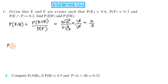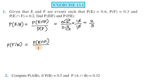Next, find P(F|E). The formula for P(F|E) is P(E∩F) divided by P(E). P(E∩F) is 0.2 and P(E) is 0.6.